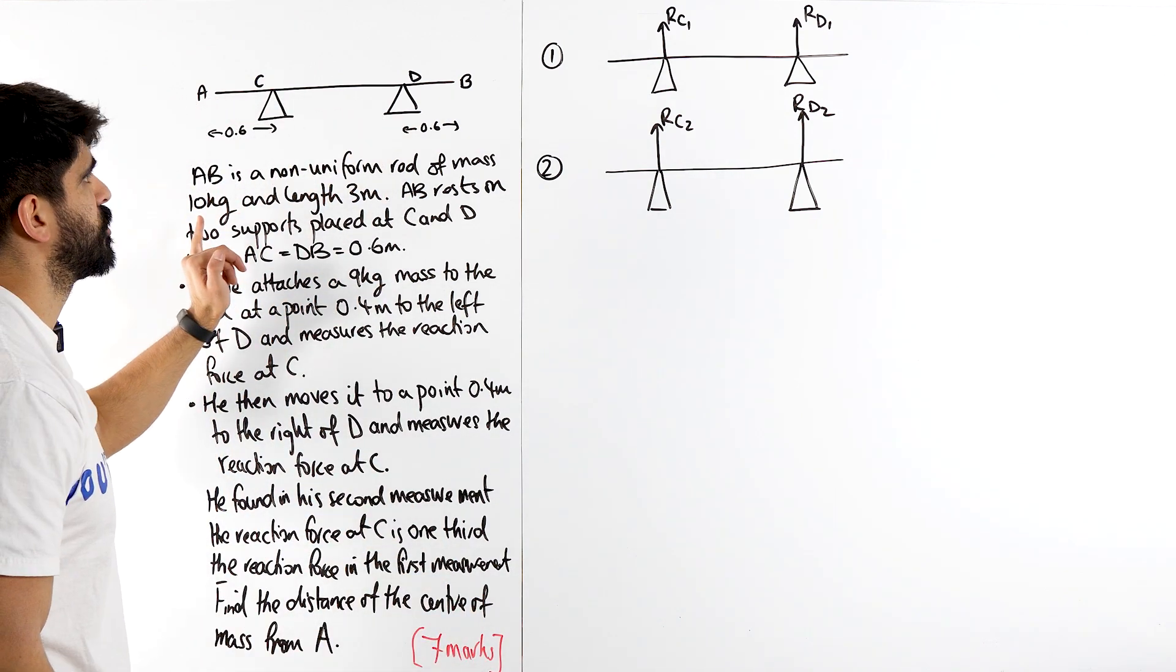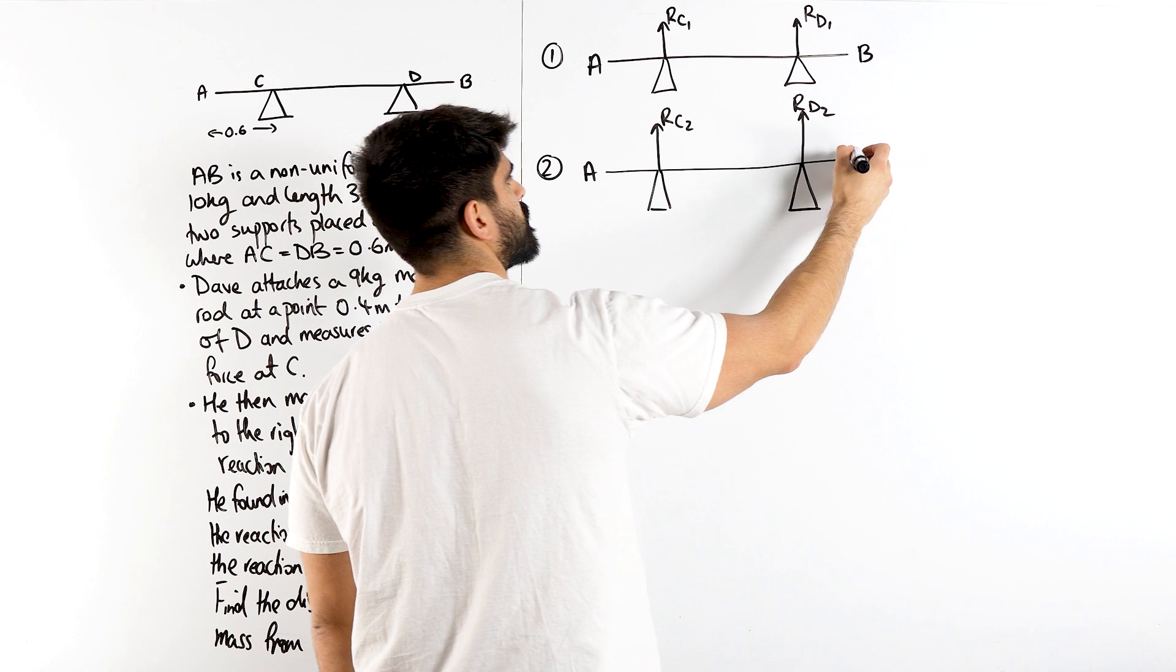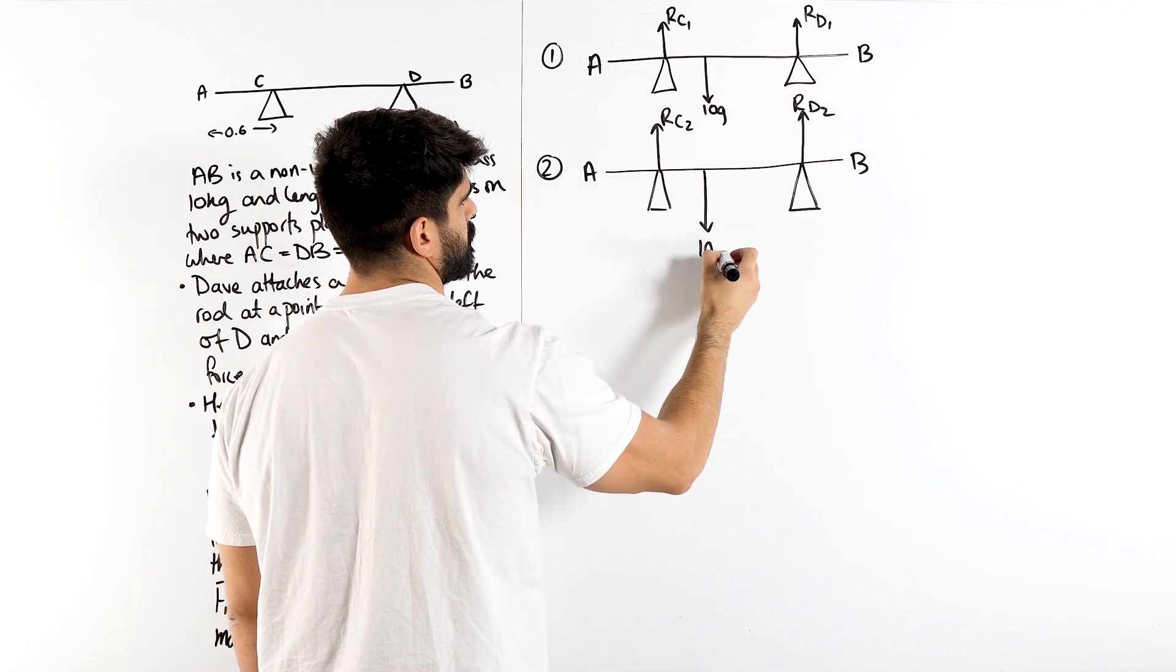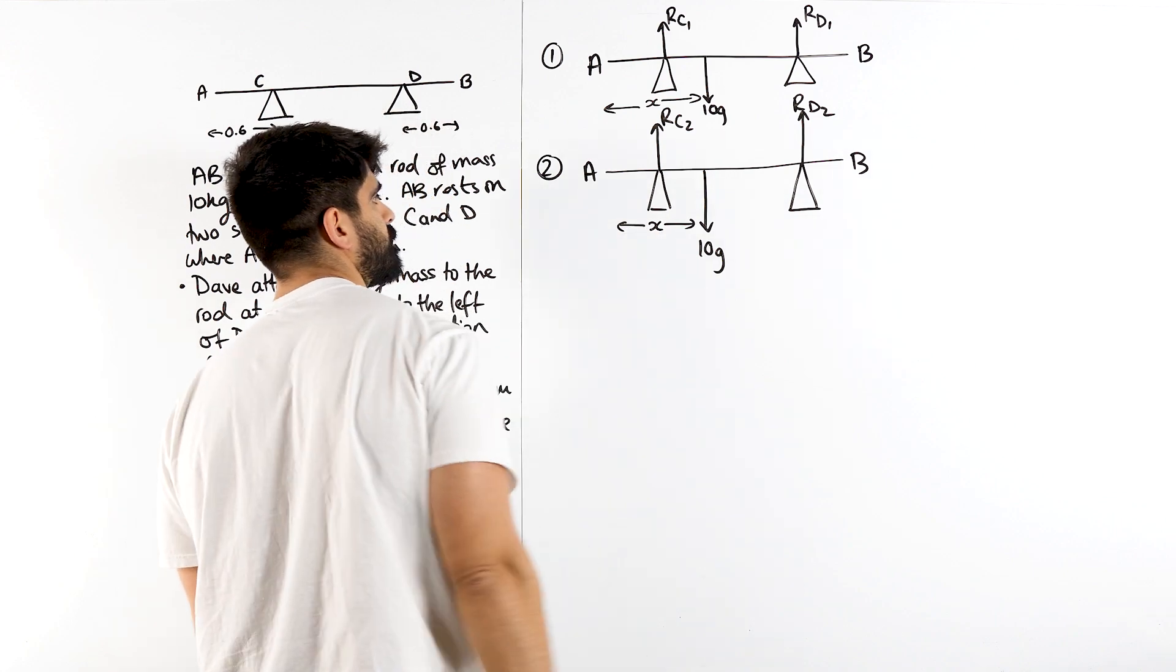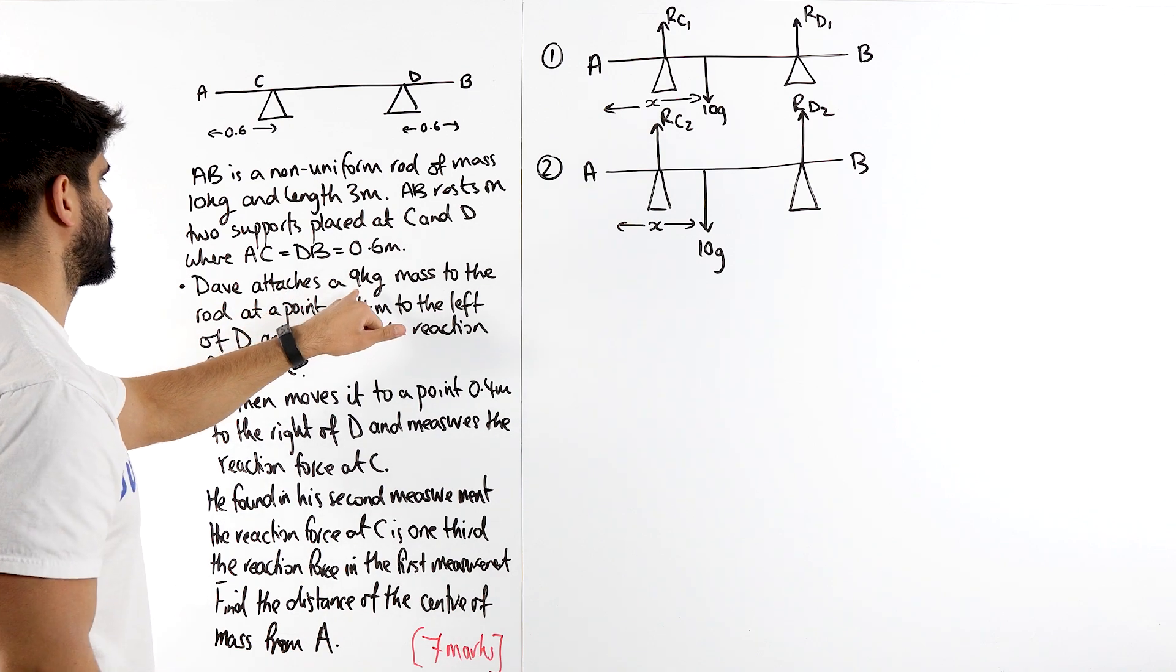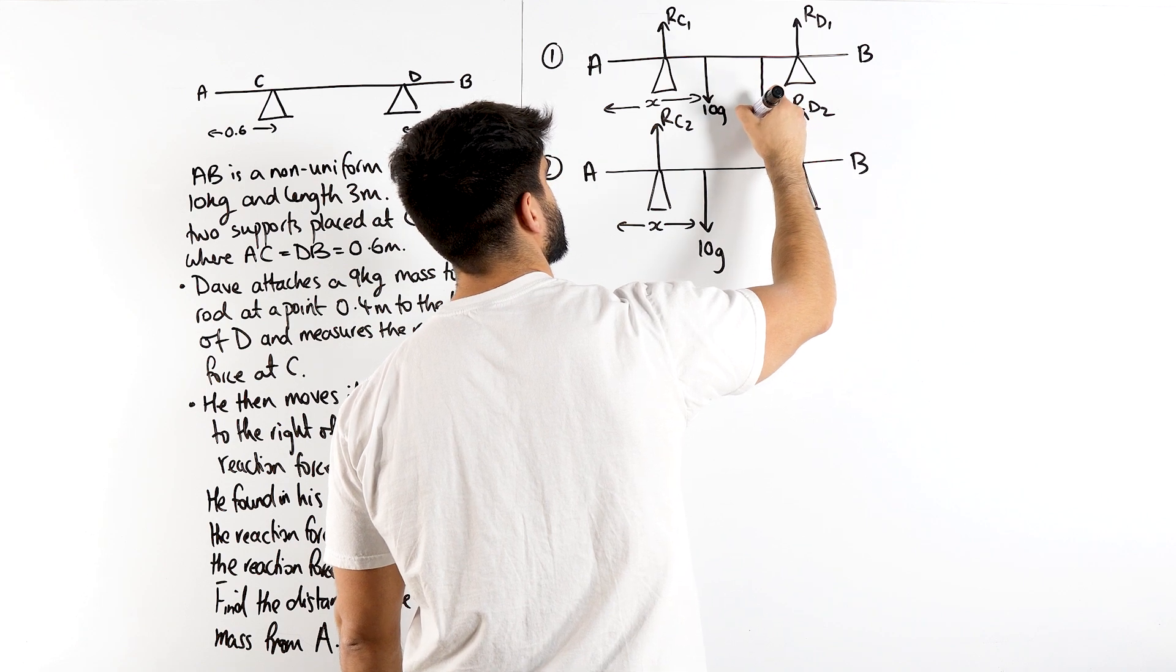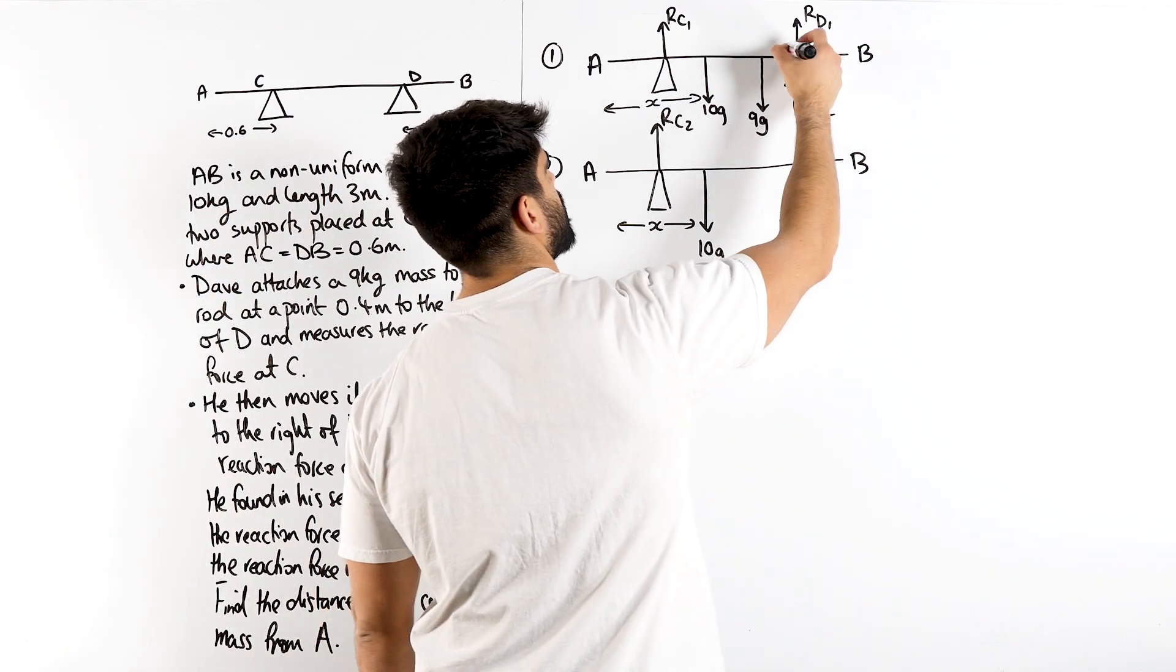It's a non-uniform rod of mass 10 kg, so we don't know where the center of mass is, but it's all relative to A, based on the question. So let's put it off-center. We know that the mass is 10g, and let's say its distance from A is x, which we're trying to find. Dave attaches 9 kg to the rod, 0.4 meters to the left of D. So 9g, 0.4 meters to the left.